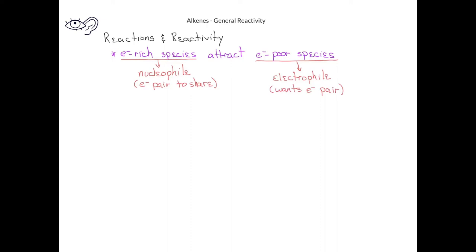In terms of examples of nucleophiles, we can think of things that have, for example, the hydroxide ion with a lot of lone pairs and a negative charge, or a chloride ion with four lone pairs of electrons and a negative charge. Nucleophiles do not need to have a negative charge. For example, amines, which have a nitrogen with a lone pair of electrons, could also be nucleophiles. Water with two lone pairs on the oxygen could also serve as a nucleophile.